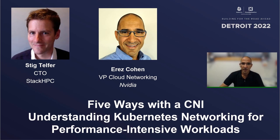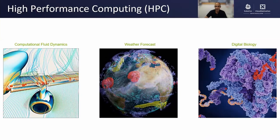In this talk we will discuss and compare some of the most common Kubernetes networking configurations for performance intensive workloads. High performance computing or HPC is a field of computer science that solves complex problems such as fluid dynamics for aircraft design, large-scale weather forecast, or drug discovery through the use of large-scale compute simulations. HPC is one of the most compute, network, and storage intensive workloads. Technologies developed for HPC often make their way to more standard data center applications.